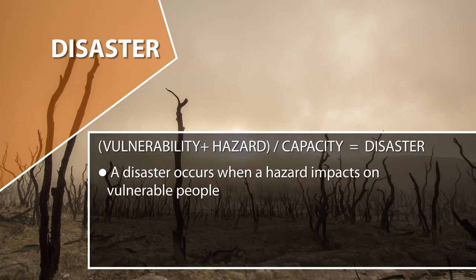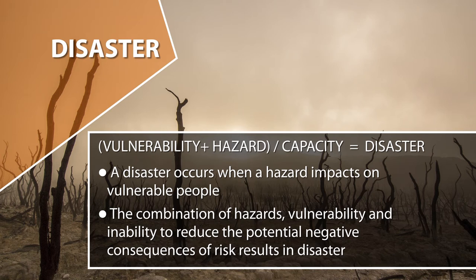It is said that a disaster occurs when a hazard impacts vulnerable people. So: vulnerability plus hazard, in relation to the capacity of the individual, becomes disaster. When capacity is insufficient to deal with the consequences, and the combination of hazards, vulnerability, and the inability to reduce potential negative consequences at risk all combine, the result is disaster. If you teach about disaster in class, your students may give you different examples.